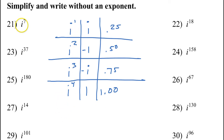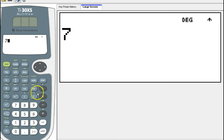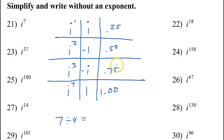Here's how it works — take i to the seventh power as an example. All you have to do is take 7 and divide by 4. Using a basic calculator, 7 divided by 4 is 1.75. Focus on the decimal: .75. That .75 tells me the answer is negative i. So i to the seventh power is simply negative i. It's a shortcut.